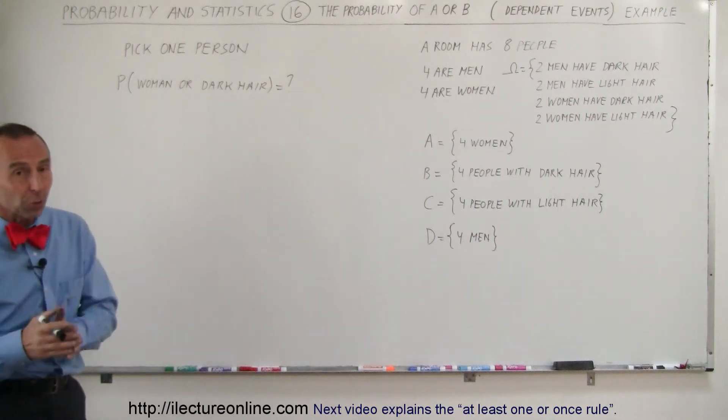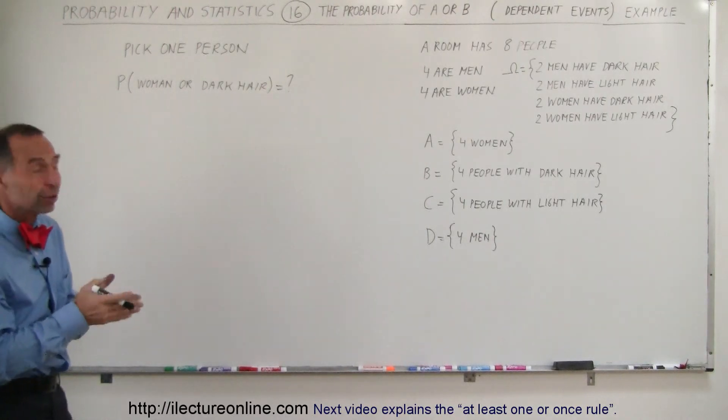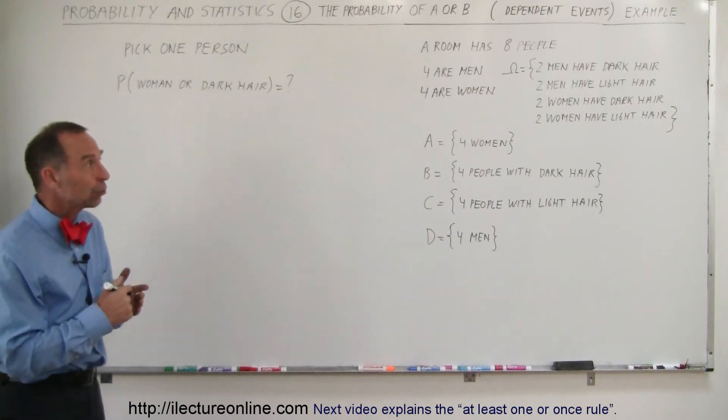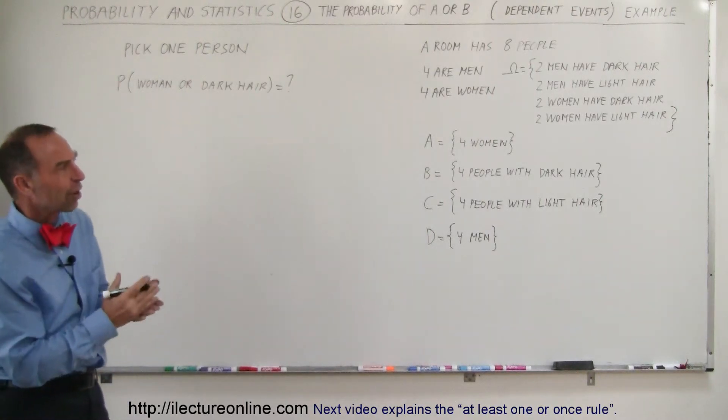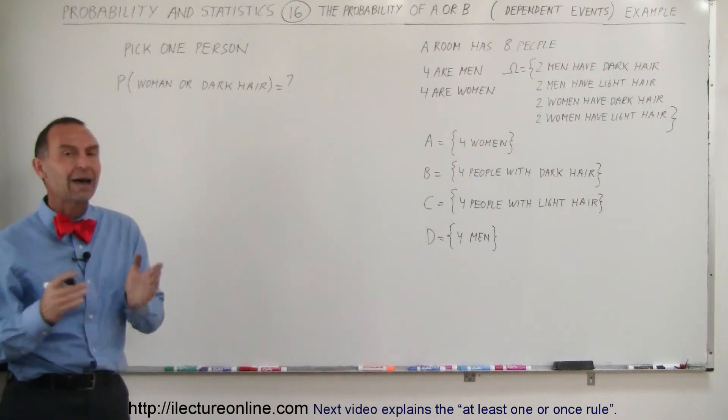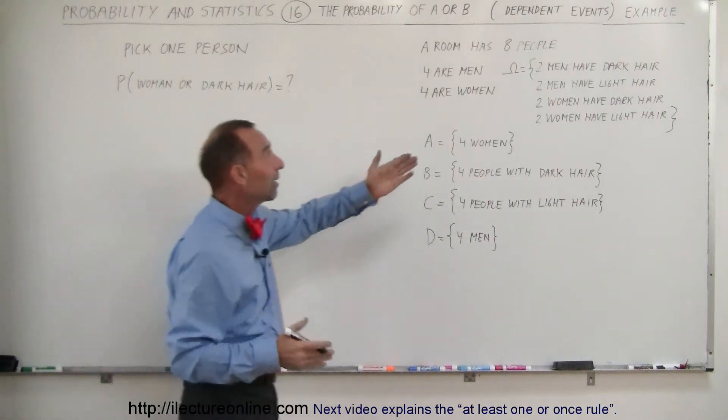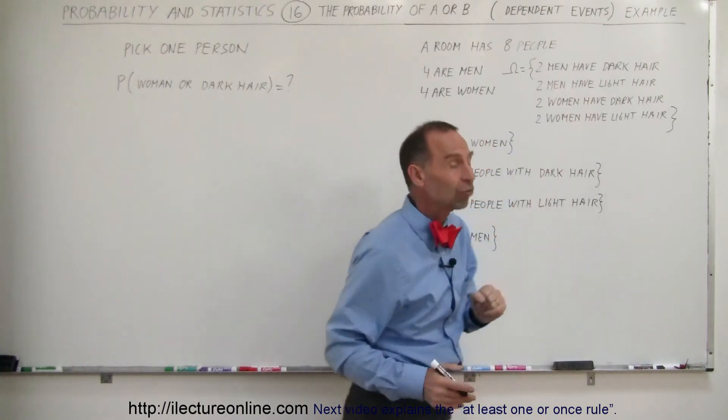Let's say we have eight people in a room. Four of the eight people are men, the other four are women. Two of the men have dark hair, two of the men have light hair, two of the women have dark hair, and two of the women have light hair. So the sample space is a total of eight people in this configuration.